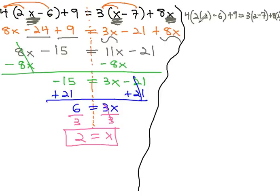Order of operations requires us to do the parentheses first, and so we'll do that on both sides. So we have 4 times, 2 times 2 is 4, minus 6, plus 9. We hope that's equal to 3 times, 2 minus 7 is negative 5, plus 8 times 2.